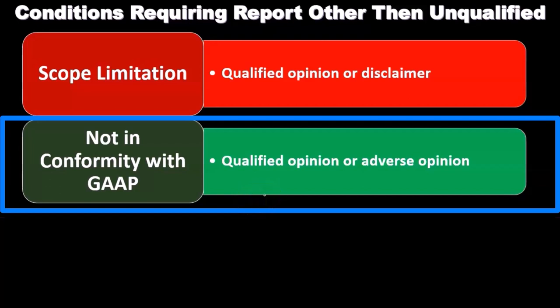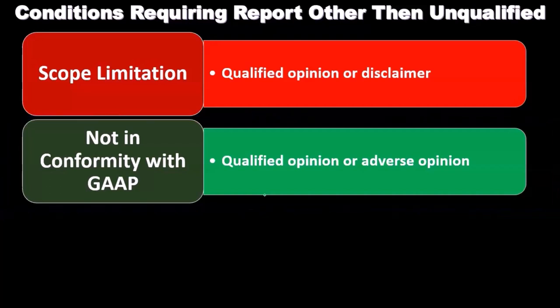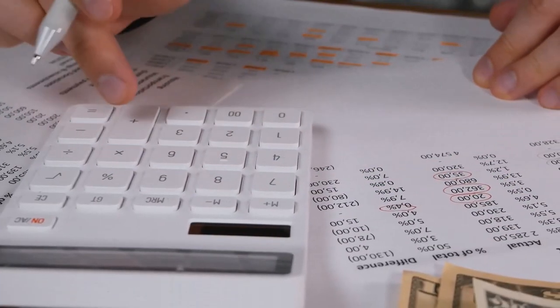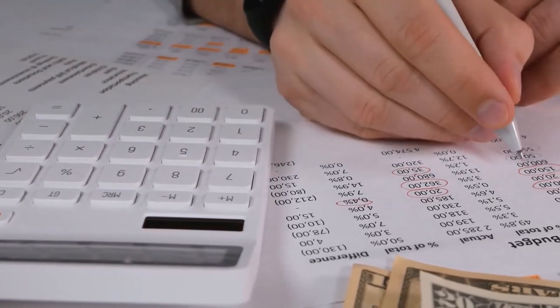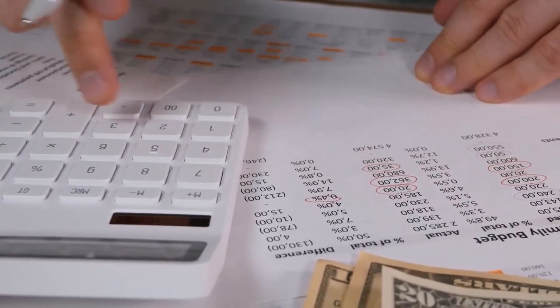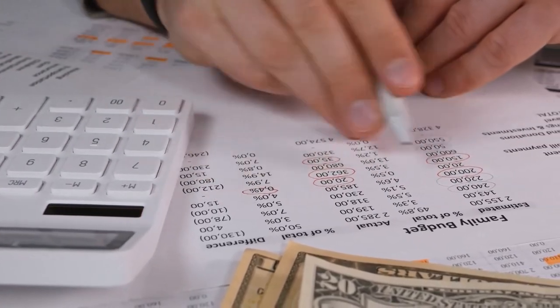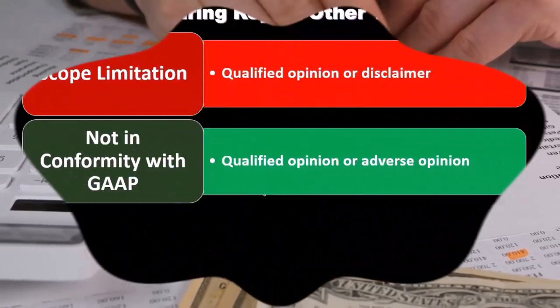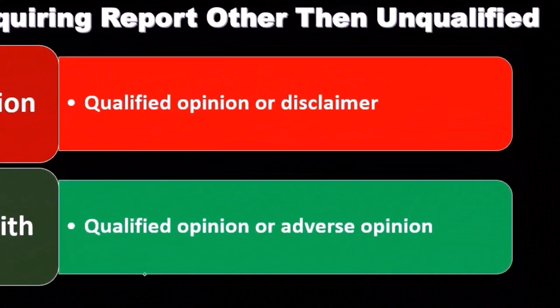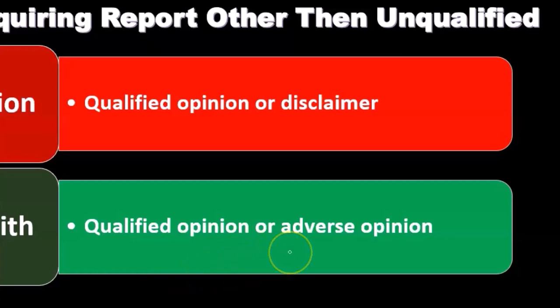If financial statements are not in conformity with generally accepted accounting principles, we'd have a qualified opinion or an adverse opinion depending on the degree. If it's one component that deviates from GAAP, we might qualify that specific item while stating the rest is in conformity. If the deviation is pervasive throughout the financial statements, we'd have to issue an adverse opinion.